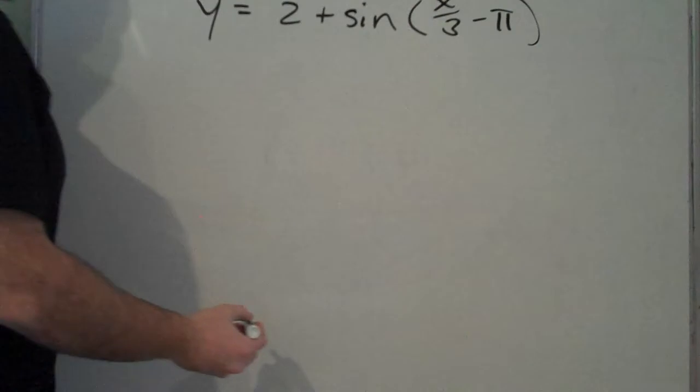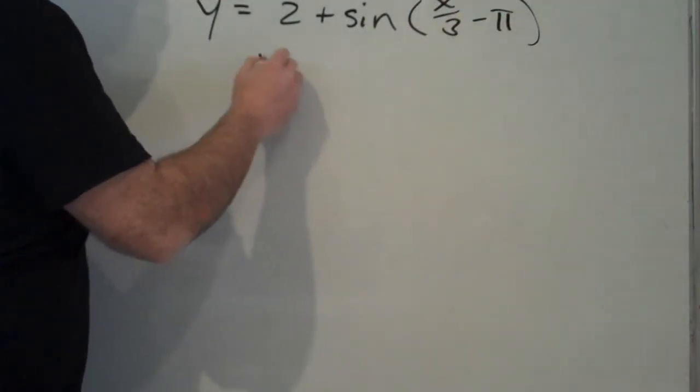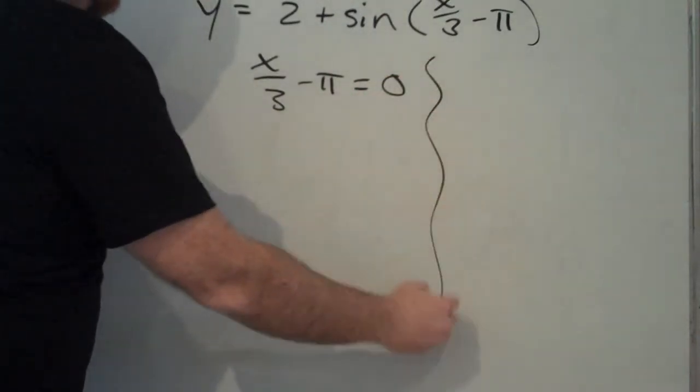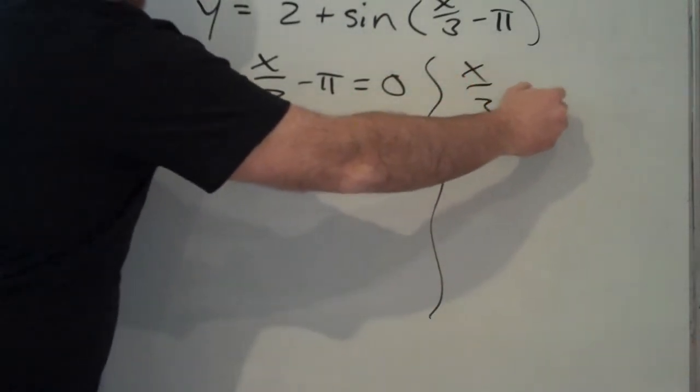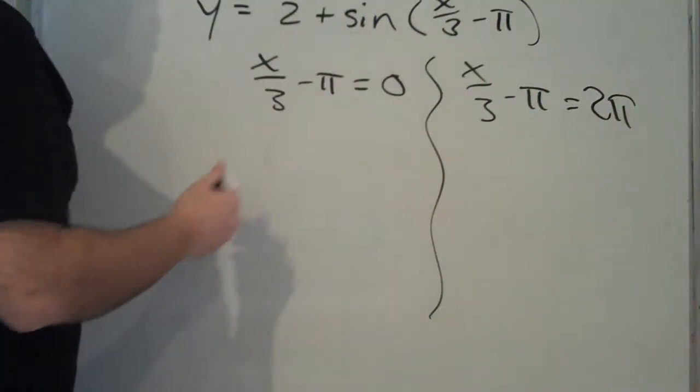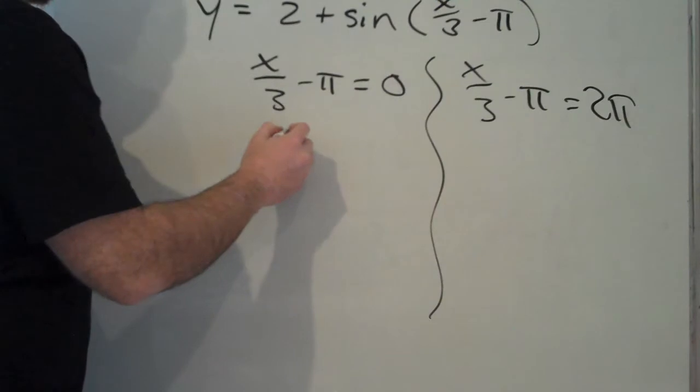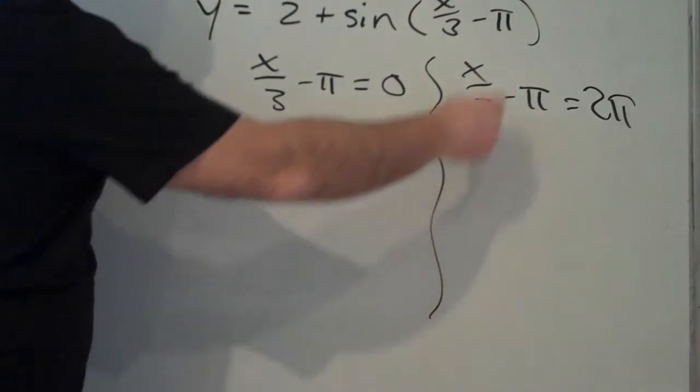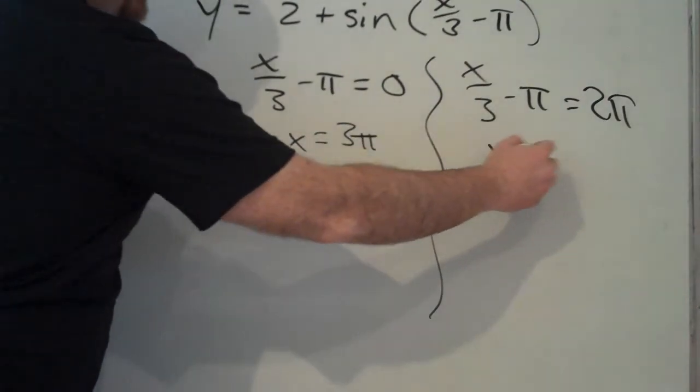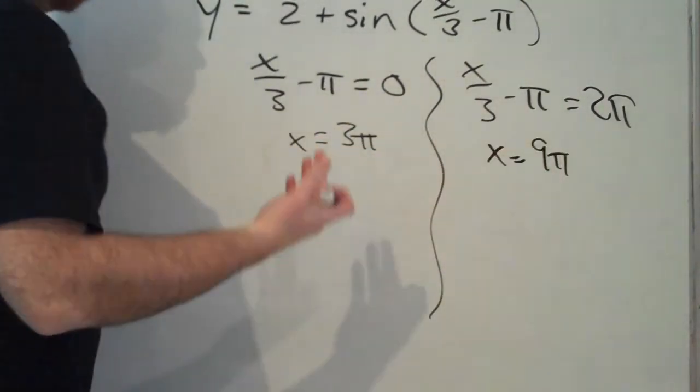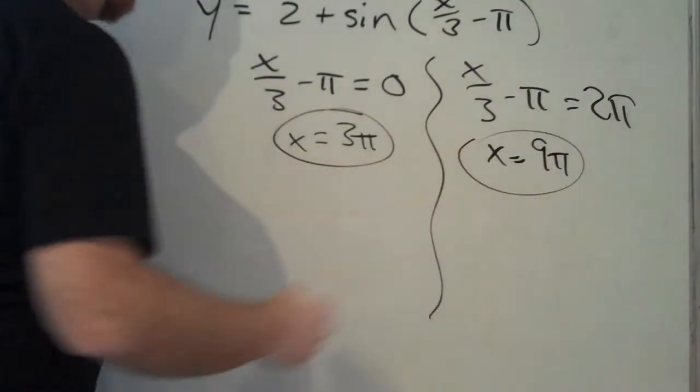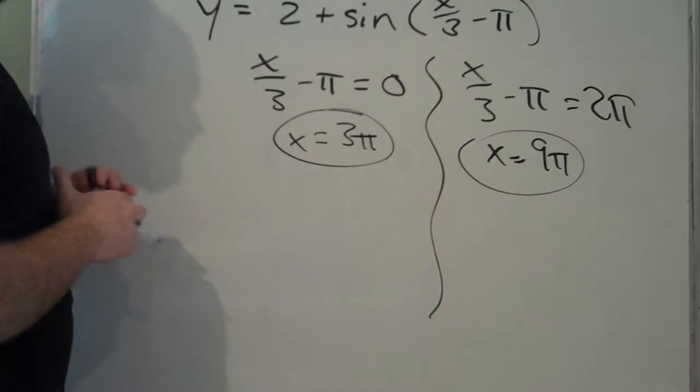Now a couple of things are going to go into this. We've got our phase shift here equals zero and two pi. So we're back to zero and two pi is the beginning and end of the period of the sine wave. Add pi, multiply by three, x equals three pi. Add pi, multiply by three, x equals nine pi. Or if you want, multiply everything by three and go from there. So we have our beginning and end of the period.